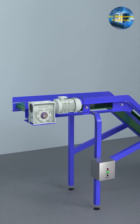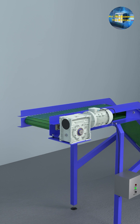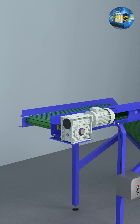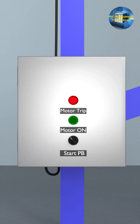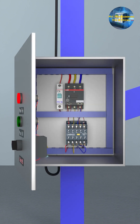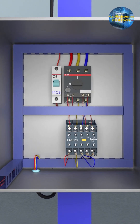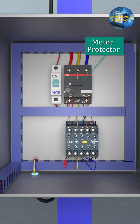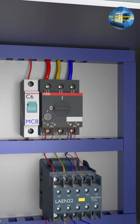After some time, the conveyor motor starts to overload and draws more than the rated current, and eventually the motor protector breaker inside the control panel trips and the conveyor stops. If we go back and open the electric panel for this motor, you can see that the motor protector is tripped and thus cuts the power being supplied to the motor by turning off its contactor.